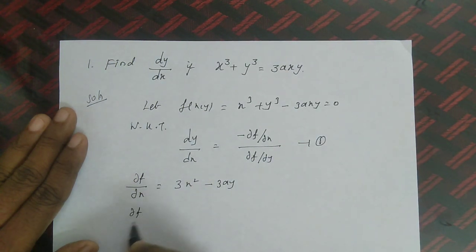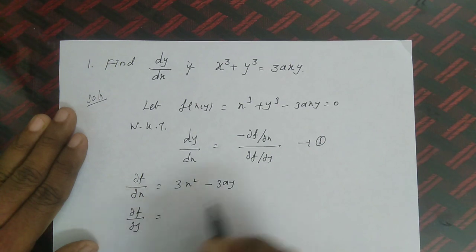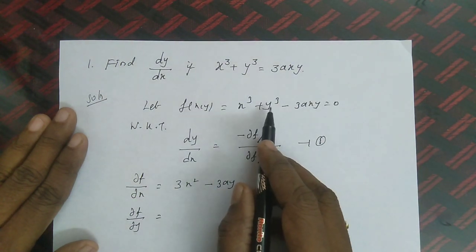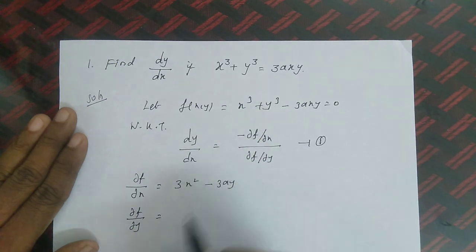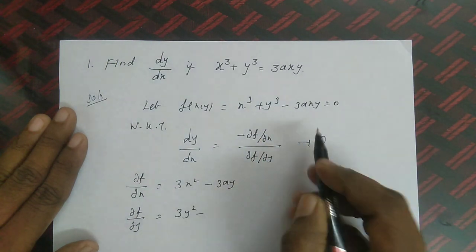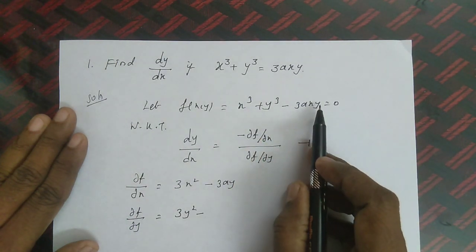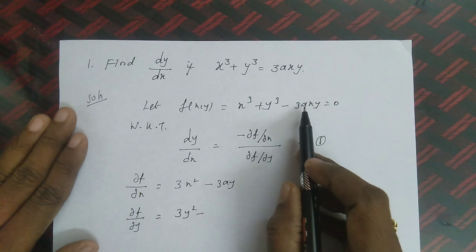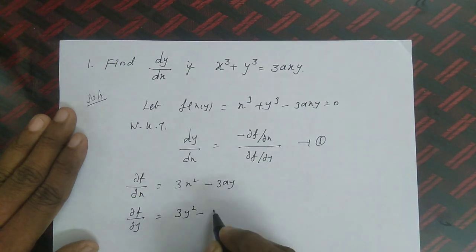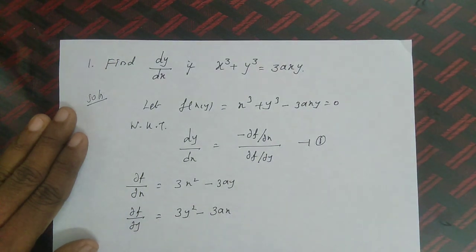Likewise, ∂f/∂y: x³ is constant so gives 0, differentiation of y³ is 3y², and -3ax (constant) times derivative of y gives -3ax. So ∂f/∂y = 3y² - 3ax.